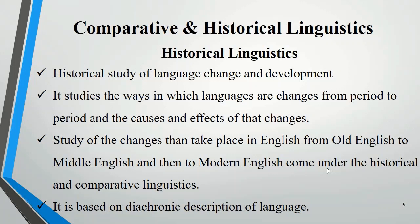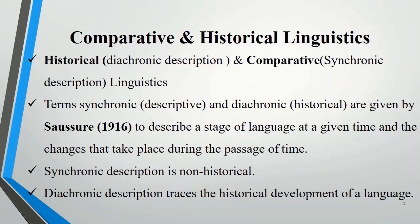All the changes studied from one period of English to the next are studied under the heading of historical and comparative linguistics. Historical linguistics is based on diachronic description of language, whereas comparative linguistics is based on synchronic description of language and involves a comparative study of languages.